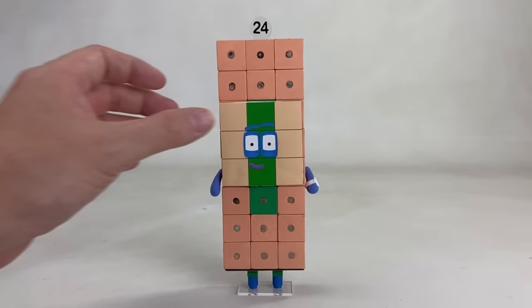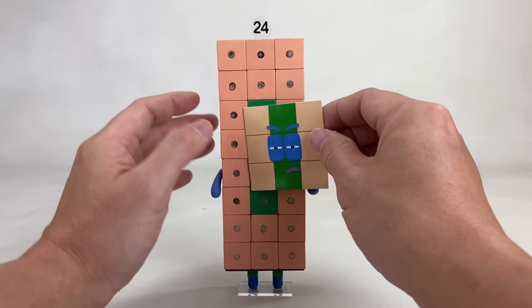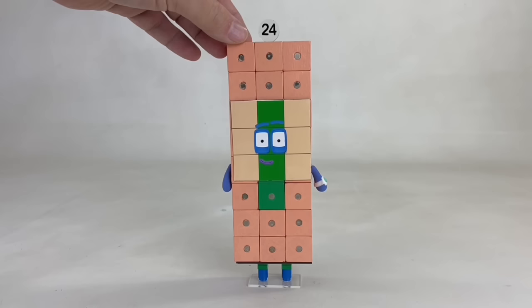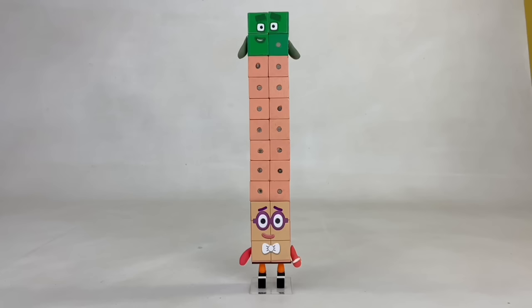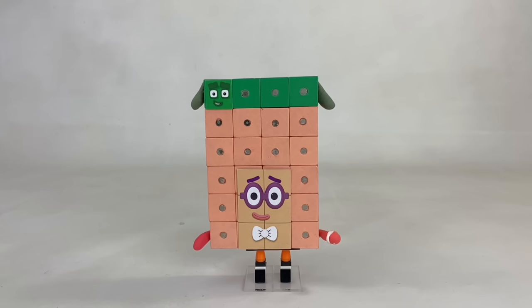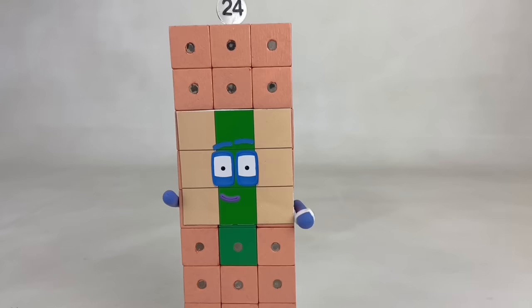Now here's a surprised face and an angry face. I'm 24, and I'm a super-duper rectangle. Check out my array display. I can make many rectangles. 2 by 12, 3 by 8, 4 by 6, 6 by 4, 8 by 3. I can do this all day and all night too.